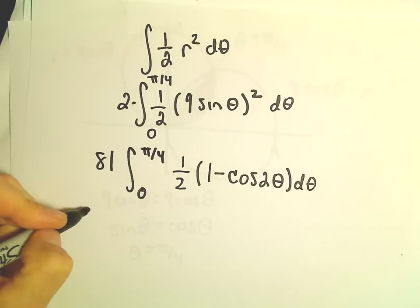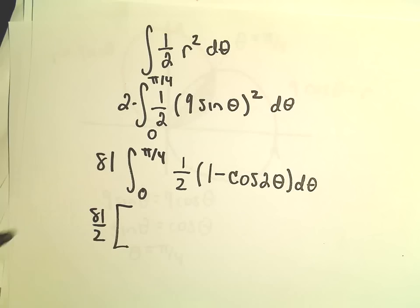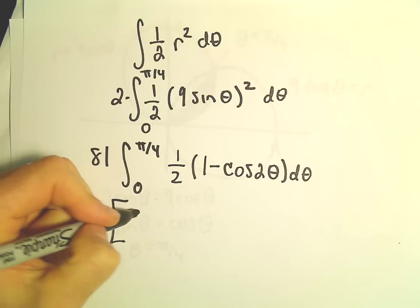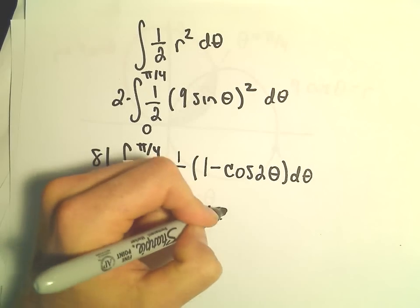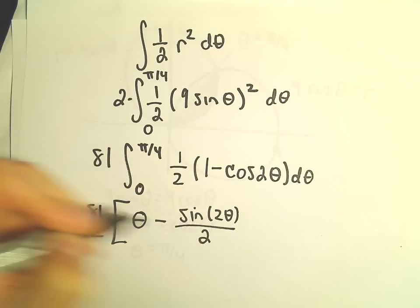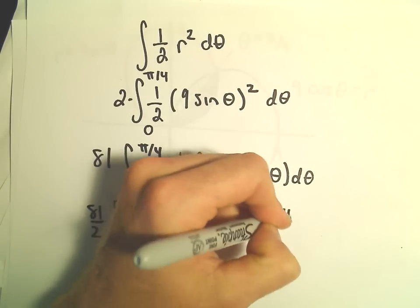We'll get 81 over 2 when we pull the 1 half out. We can go ahead and integrate this. The antiderivative of 1 is just theta. We would get minus sine of 2 theta over 2. All of this would be evaluated from 0 to pi over 4.